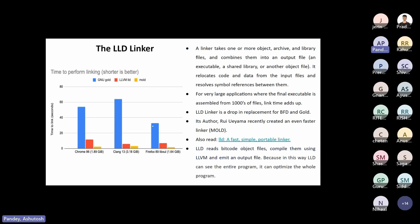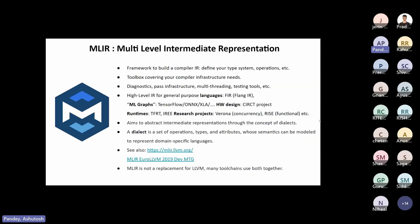LLD needs bitcode object files, compiles them using LLVM, and emits an output file. Because of the power of LLVM IR and reading bitcode files, it can see the entire program and optimize it all at once. Ueyama has also developed a new linker called 'mold' that is 10 times faster than LLD. This is one of the sub-projects of LLVM.